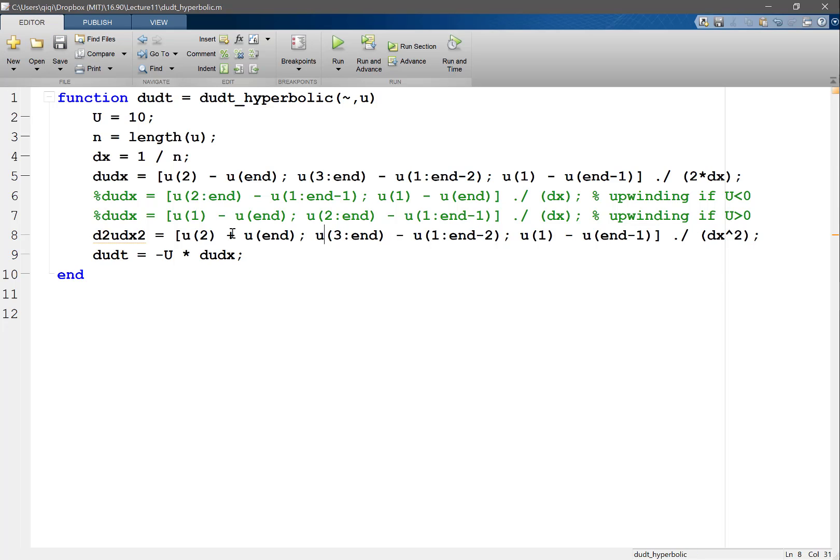I'm just going to have minus 2 times u. Any questions on how I change the first order derivative to second order? Previously I have ui+1 minus ui-1. Now I have ui+1 plus ui-1, and then I have to minus 2 times ui. So this is 2 times my minus ui, and this is my contribution from ui+1 and ui-1.